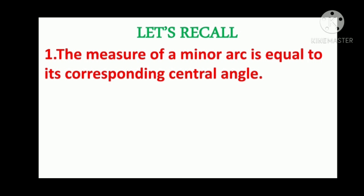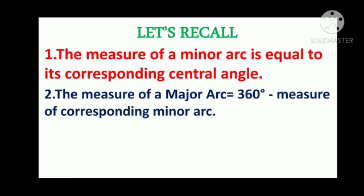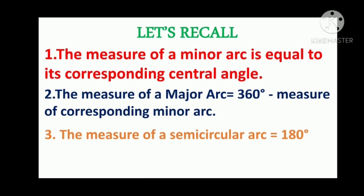Now, let's recall. First, the measure of a minor arc is equal to its corresponding central angle. Second, the measure of a major arc is 360 degrees minus measure of the corresponding minor arc. And third, the measure of a semicircular arc will always be 180 degrees.